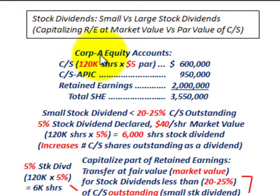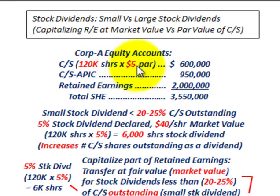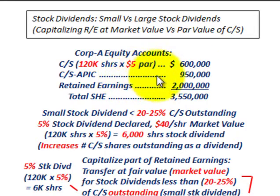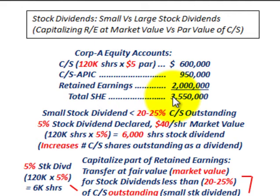Corporation A is going to have these equity accounts. They're going to have common stock — 120,000 shares outstanding at a $5 per share par value, for a total of $600,000. Then they have additional paid-in capital on common stock at $950,000, and retained earnings at $2 million. So their total stockholders' equity is $3,550,000.